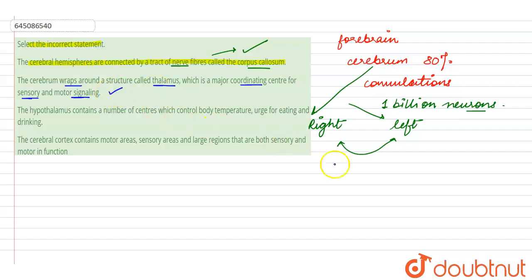So this statement is also correct because in the forebrain the next part is the thalamus which the cerebrum is going to wrap around. Below the thalamus there will be hypothalamus, and hypothalamus is that part which is a major endocrine gland as well as it is going to control the body functions such as body temperature, urge for eating, drinking, satiety center, hunger and thirst center are there in the hypothalamus. So this acts as a thermostat of the body also maintaining the temperature of the body so homeostasis is maintained.